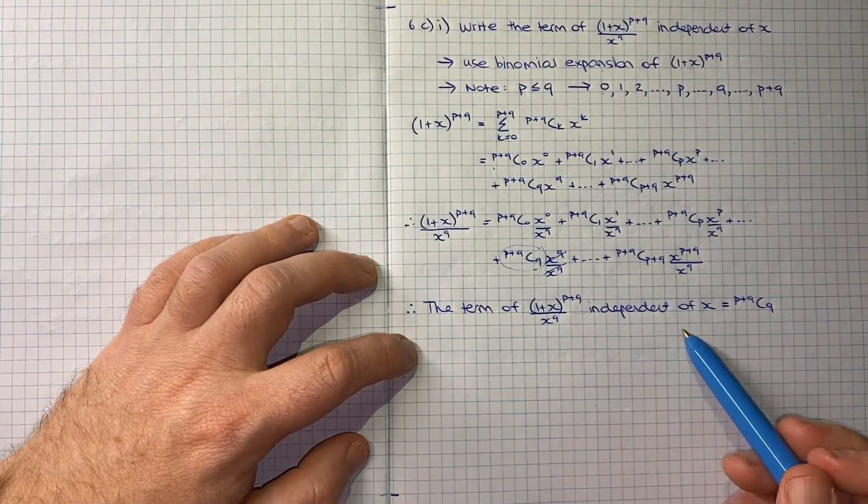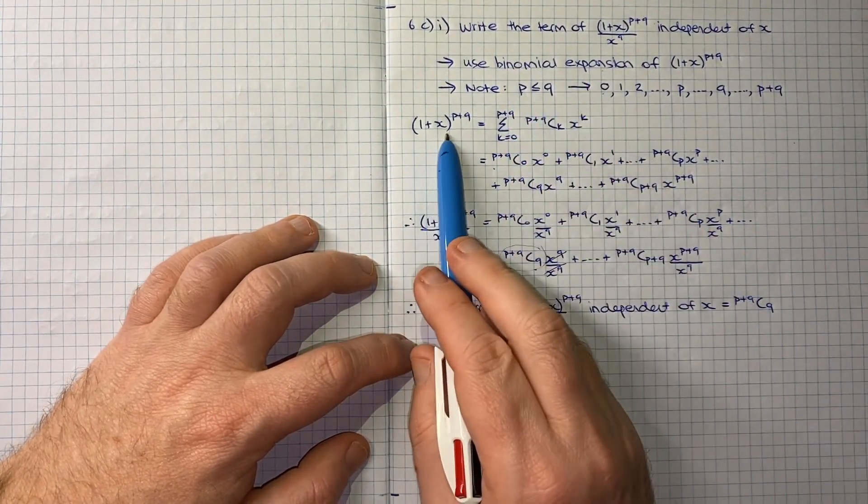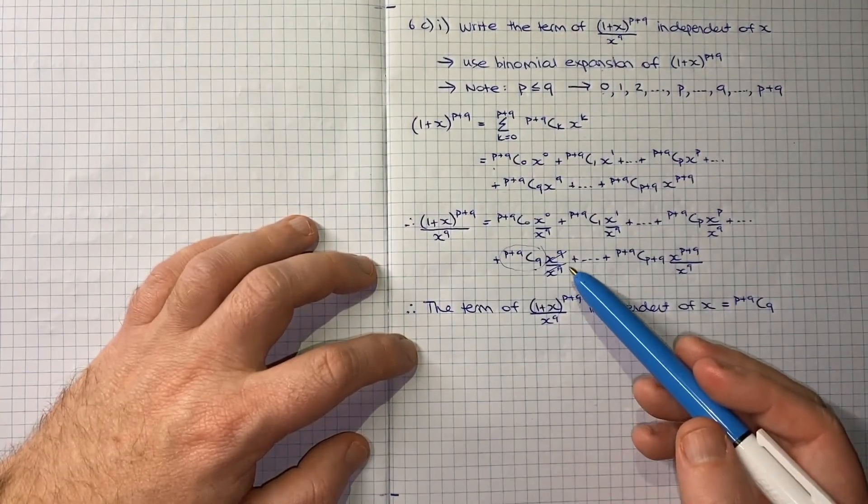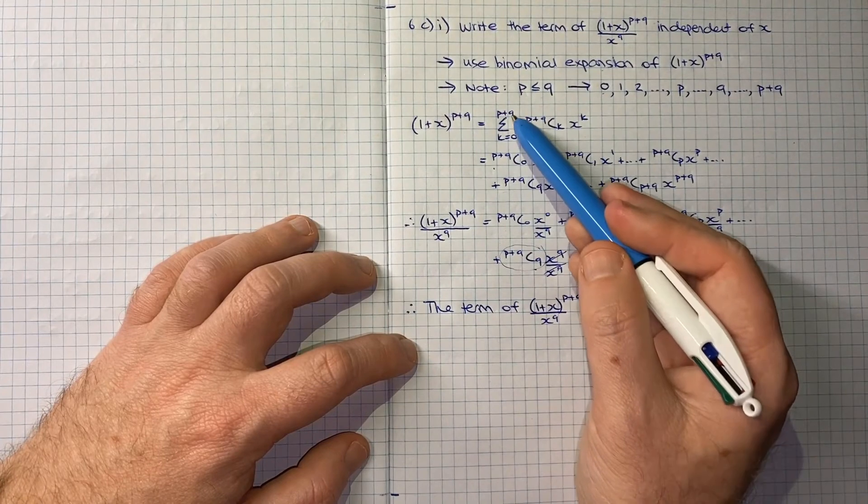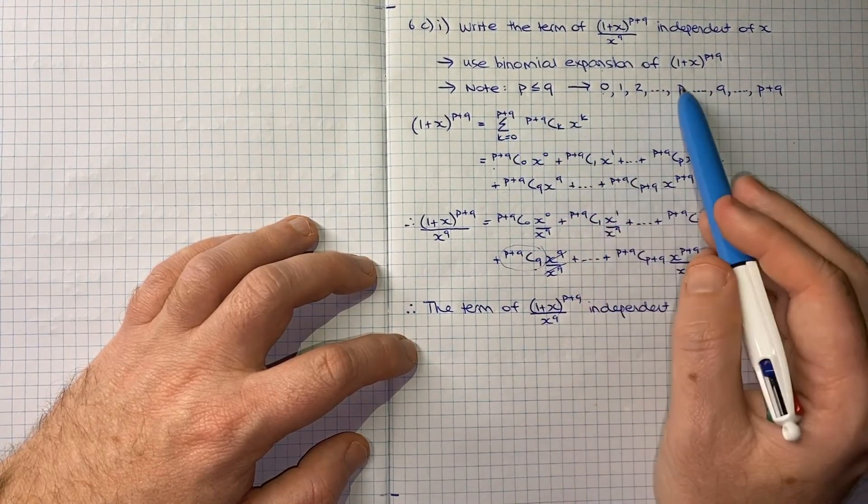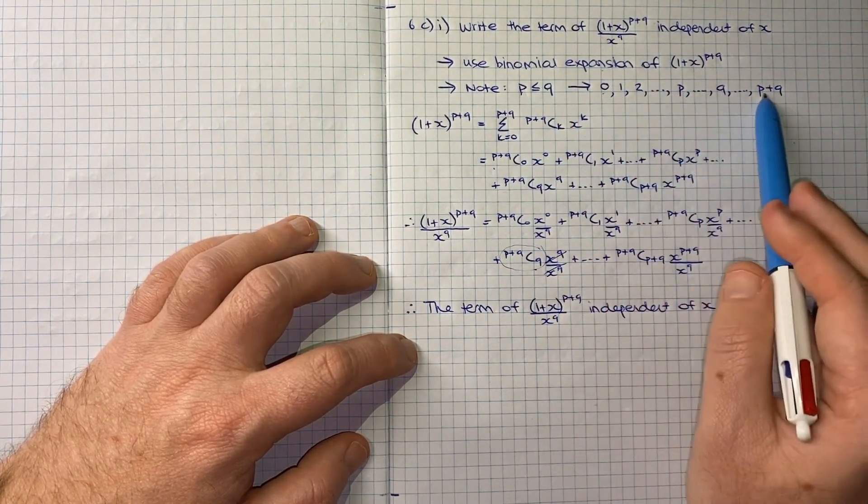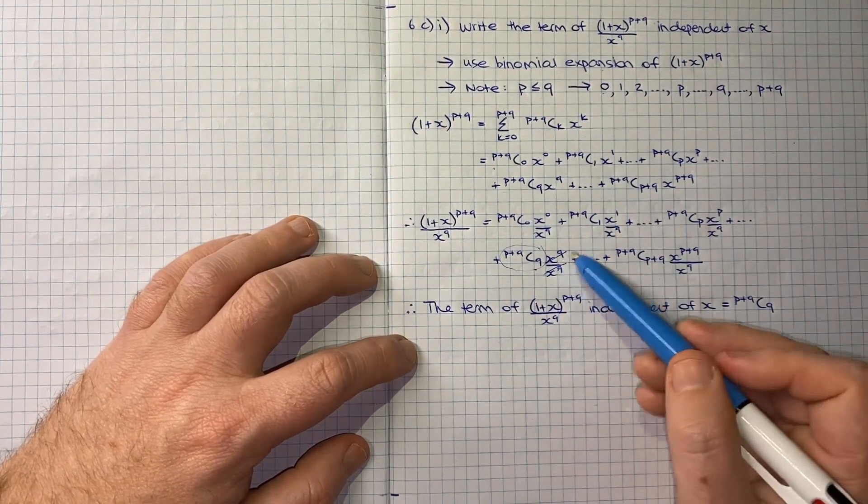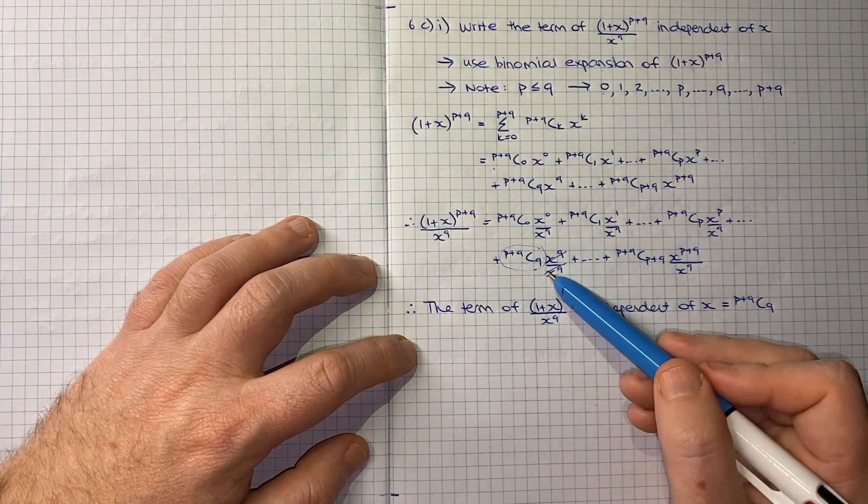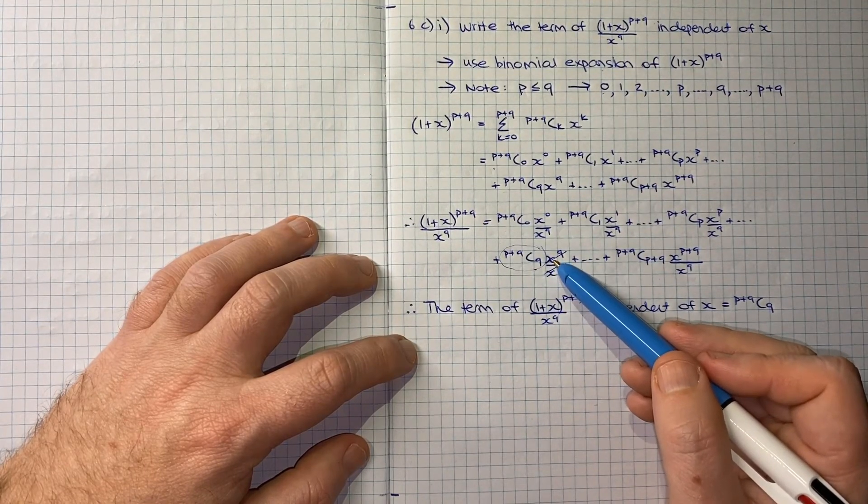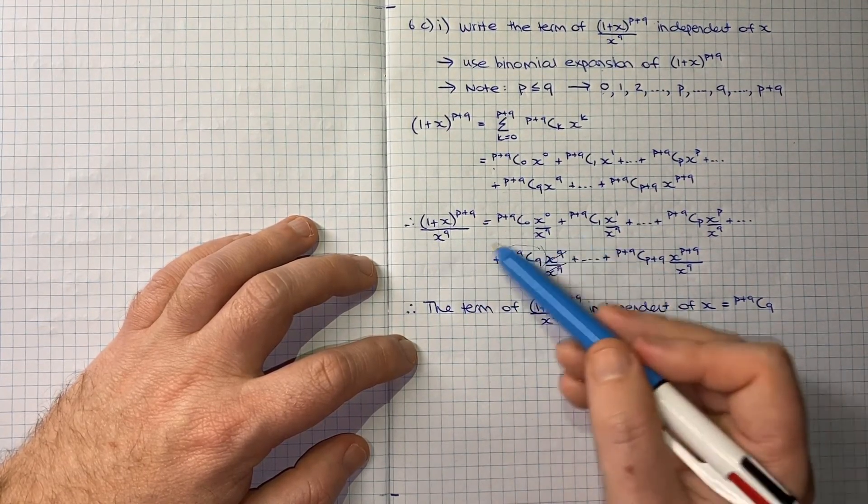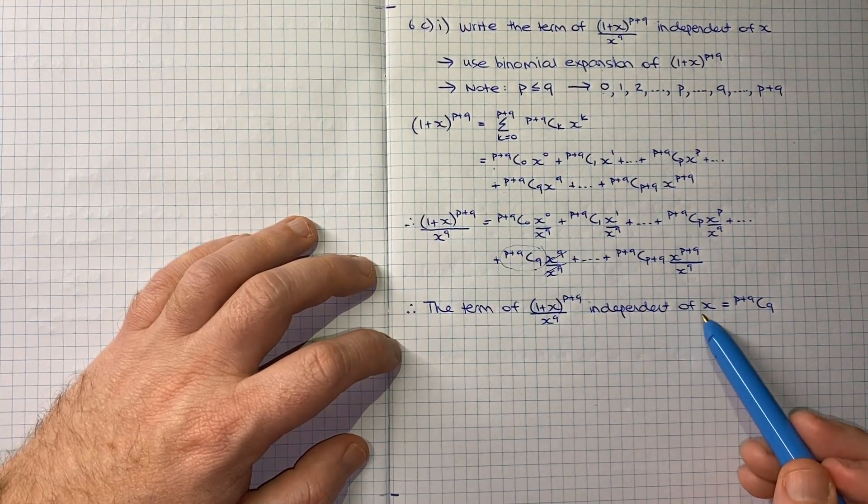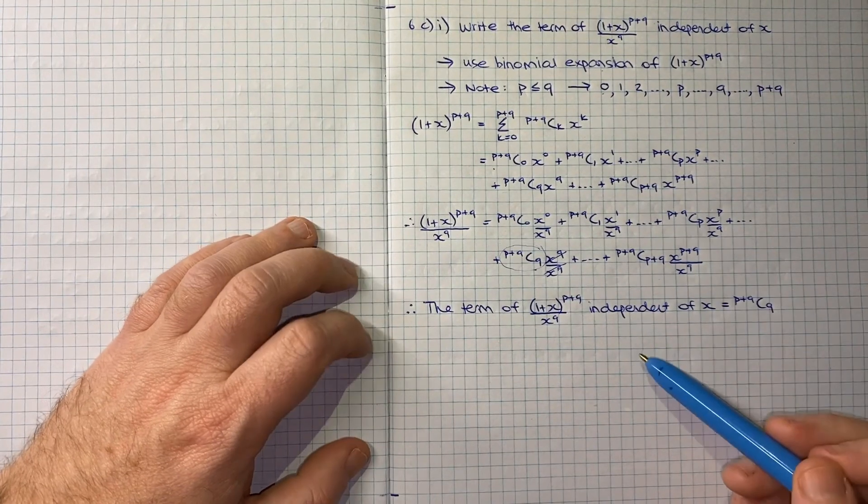Really just a matter of knowing your binomial expansion and following the guidance, and being careful with how you count between 0 and p plus q, noting that you'll hit p and q on the way. From there it falls out quite neatly because we get this situation where the x^q in the numerator cancels out perfectly with the denominator so that we do get this constant term all by itself being independent of x.